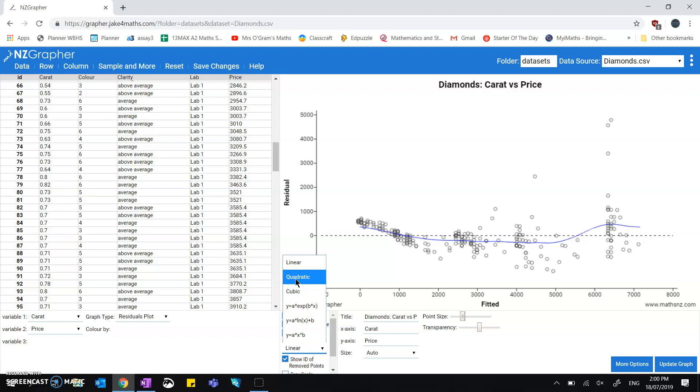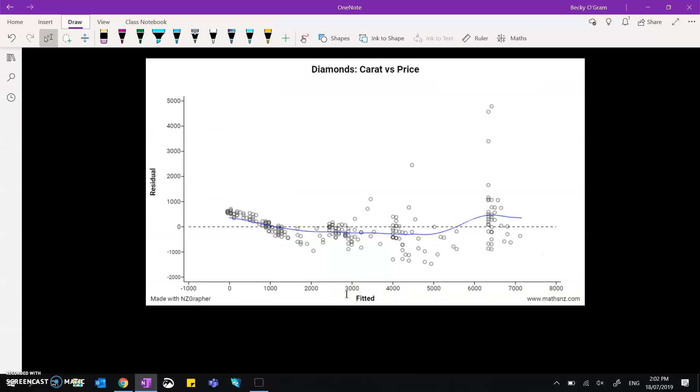Finally, what you want to do with your residuals graph is take a look at the prediction that you made and see what it tells you about your confidence in that prediction. So for example, if we took a carat size of 0.4, from the simple linear regression line we would predict that price to be around about 1670.